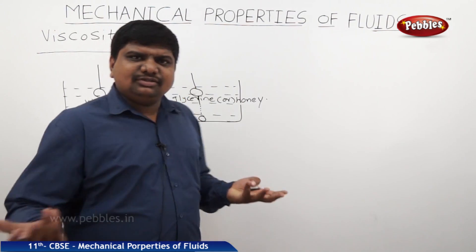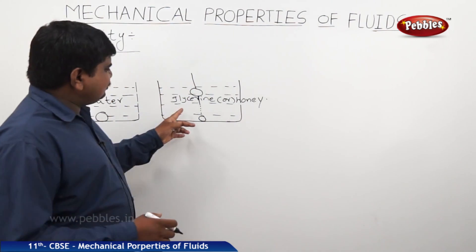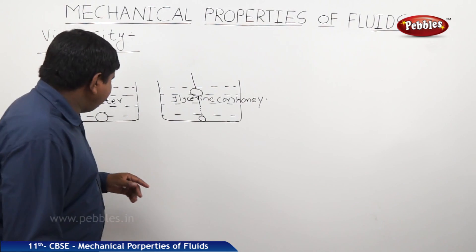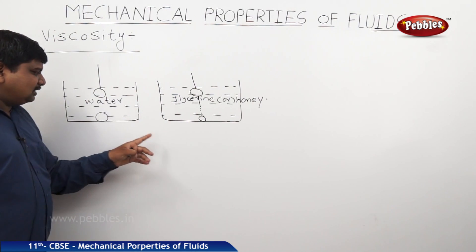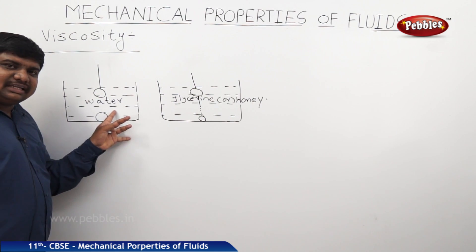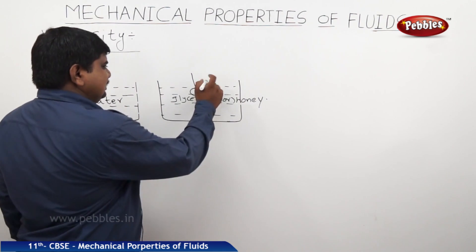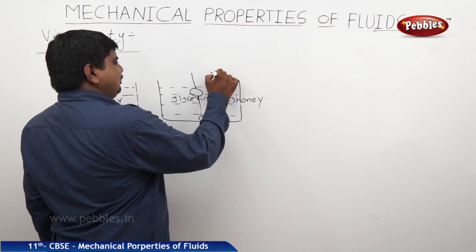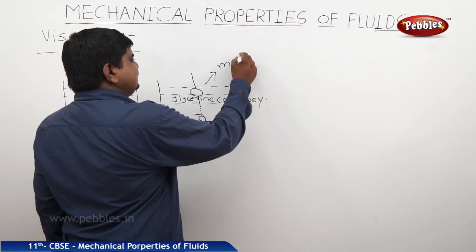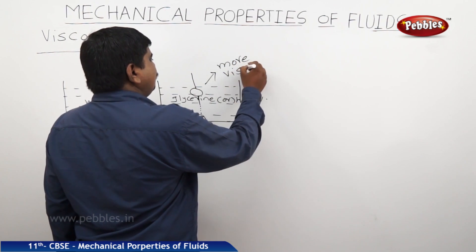Both are liquids only. But why does the lead shot in glycerin take more time to reach the bottom compared to the lead shot in water? Because glycerin or honey are more viscous than water.